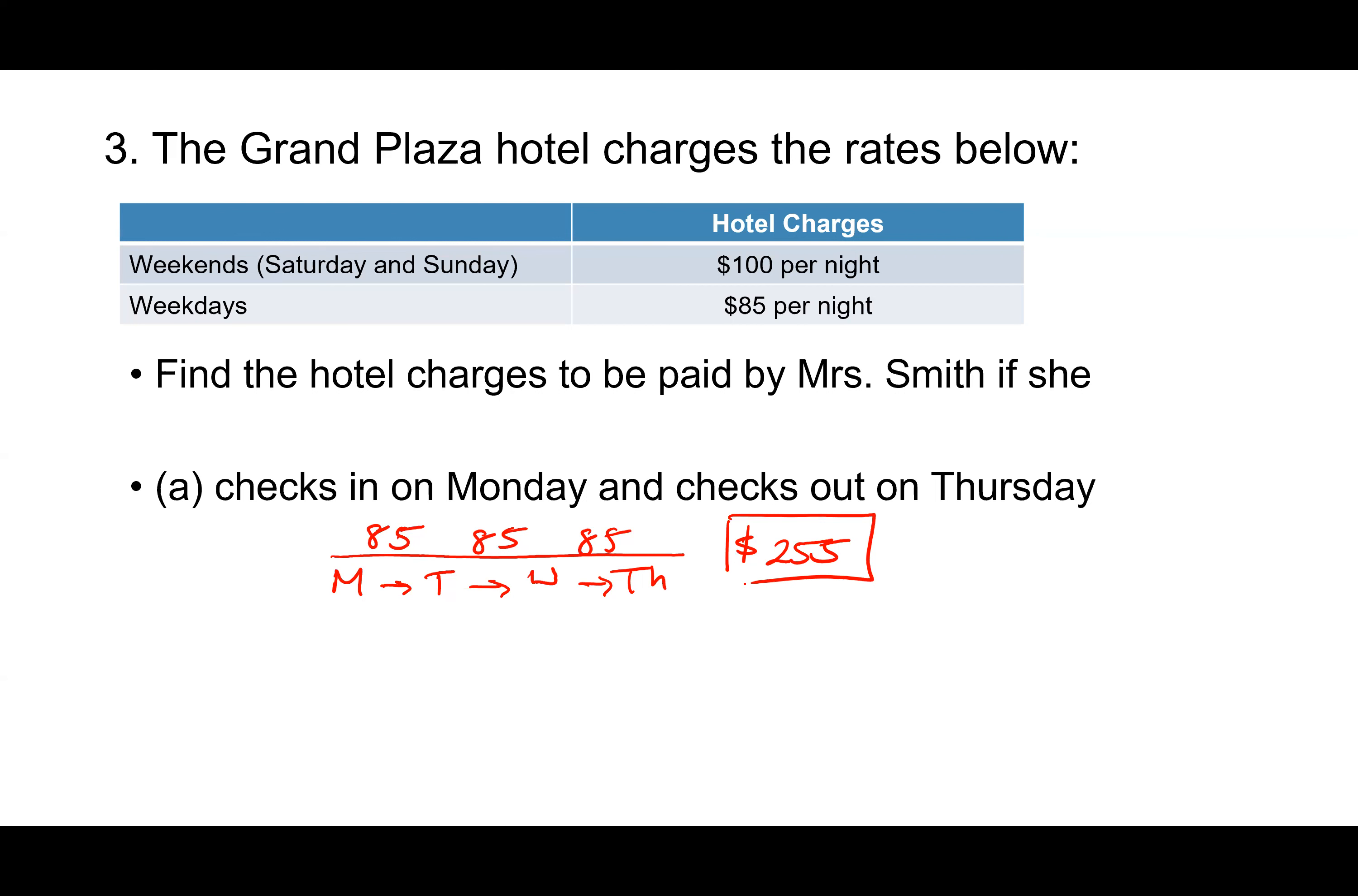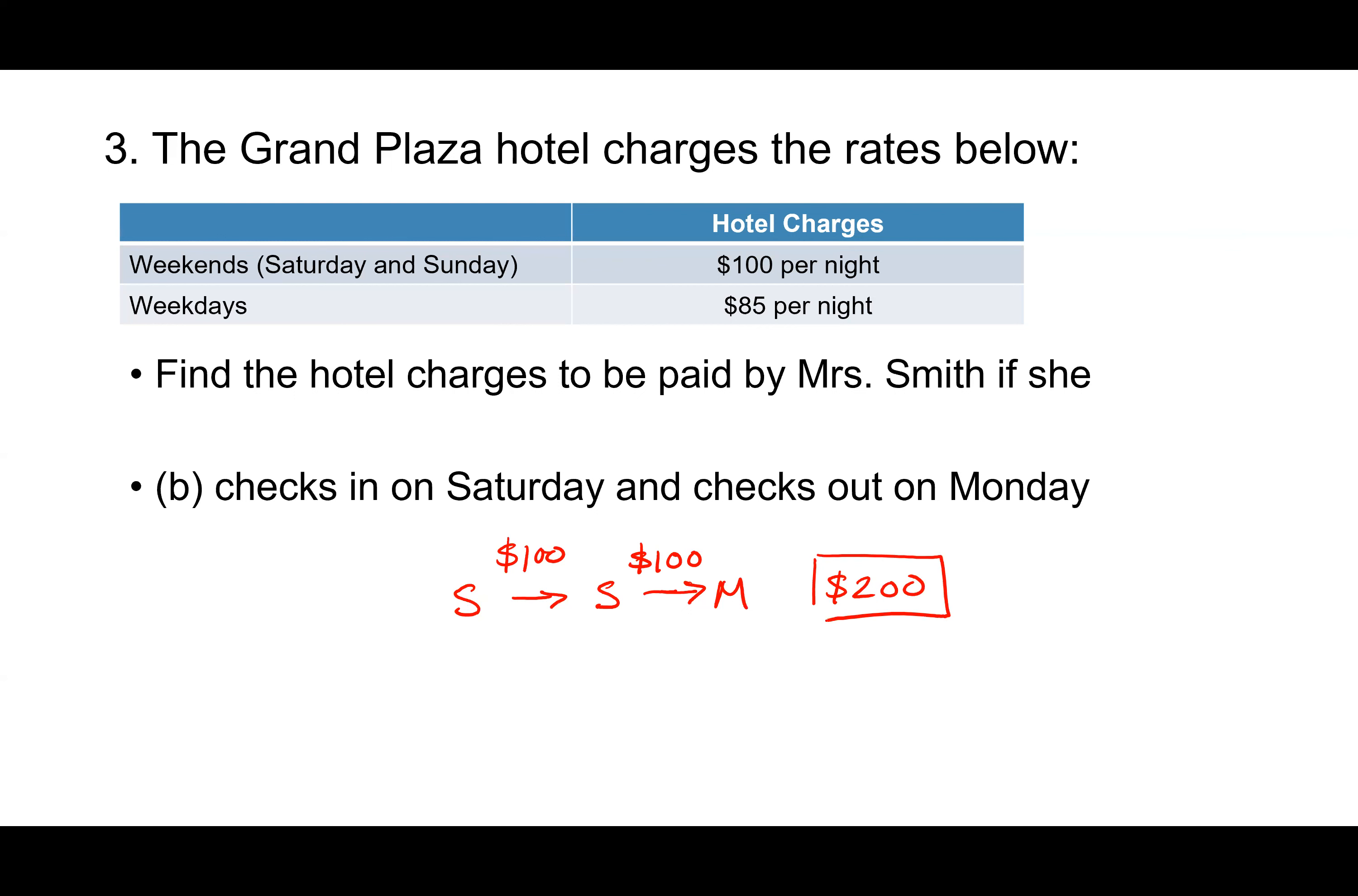And then letter B says she checks in on Saturday and checks out on Monday. Now we need to use two different rates, don't we? Actually I take it back. She doesn't pay two different rates because she's got two weekend nights there. So what's the weekend rate? Elijah? $100 per night. Good. So she pays $100 for each of those nights. And Elijah, what was the total? $200 is correct.